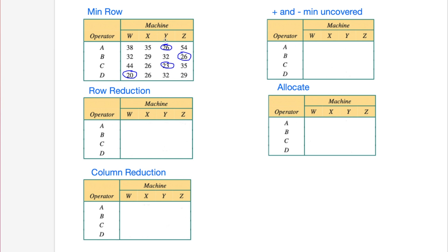You also have to factor in that even though there's a tie between persons A and C, there may be a better alternative - for example, giving machine Z to person B, because perhaps the alternative for persons A or C might actually be better if they were given Z. It doesn't look like that's the case here, but never make any assumptions. If you can't allocate immediately, follow the entire algorithm.